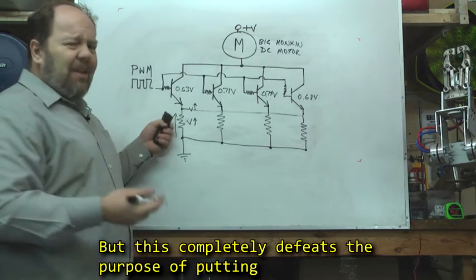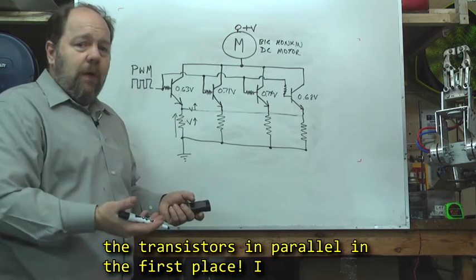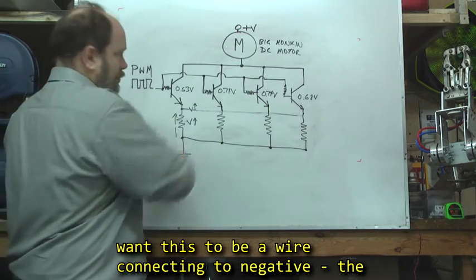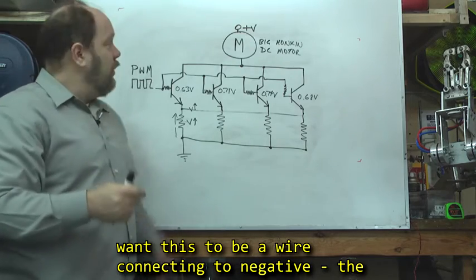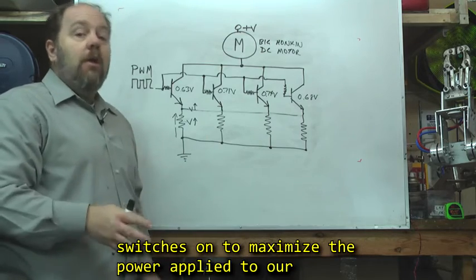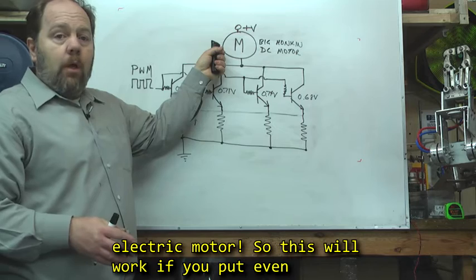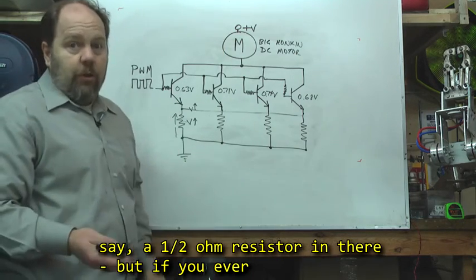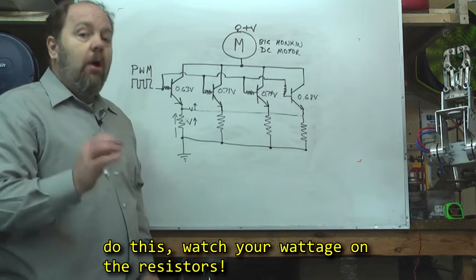But this completely defeats the purpose of putting transistors in parallel in the first place. I don't know about you, but if I had it my way, I'd want this to be a wire connecting to negative straight to the motor. The lowest possible resistance I could get when it switches on to maximize the power applied to our electric motor. So this will work if you put in even a half ohm resistor in there. But if you ever do this, watch your wattage rating on your resistors.